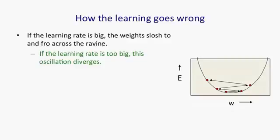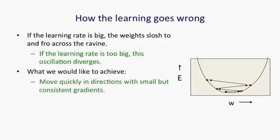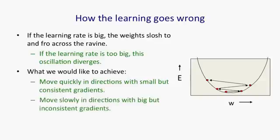So the way the learning goes wrong if you use a big learning rate is that you slosh to and fro in the directions in which the error surface is very curved. So we'll call that sloshing across a ravine. And with the learning rate too big, you'll actually diverge. What we want to achieve is that we go quickly along the ravine in directions that have small but very consistent gradients, and we move slowly in directions with these big but very inconsistent gradients. That is, if you go in that direction for a short distance, the gradient will reverse sign.